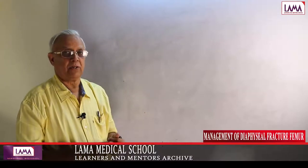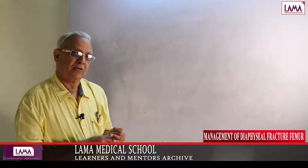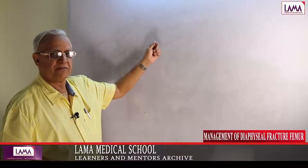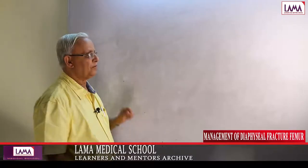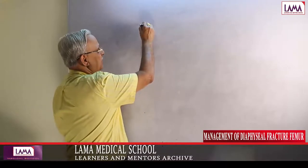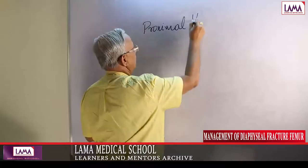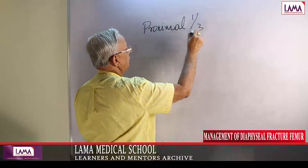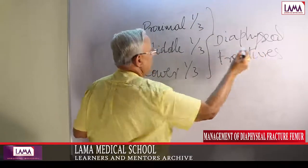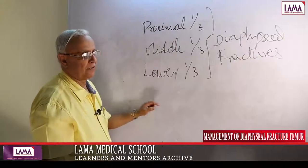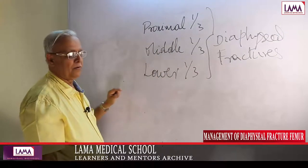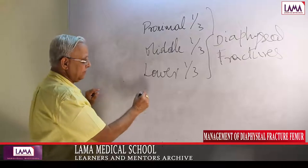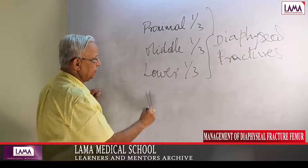For the sake of planning our treatment, diaphyseal fractures are generally divided into three categories: proximal one-third, middle one-third, and distal one-third. This is a better nomenclature — diaphyseal fractures — rather than the older term, fractured shaft of femur.